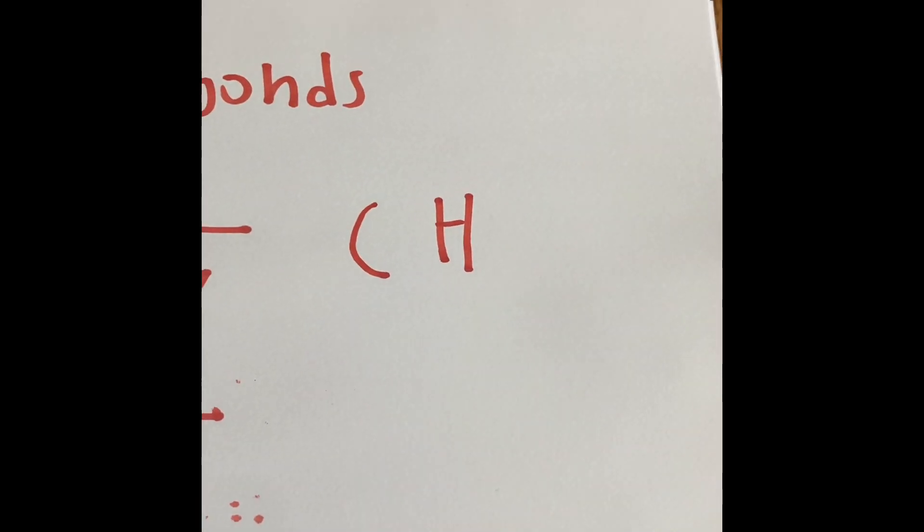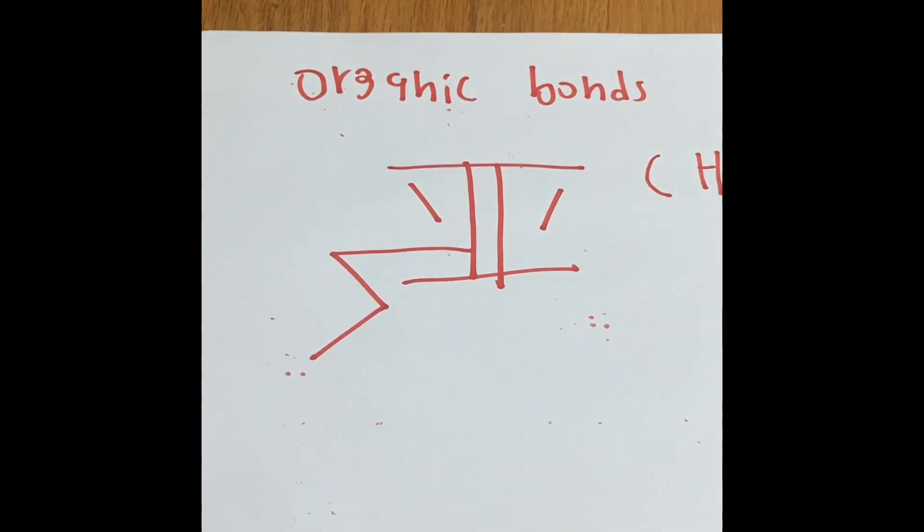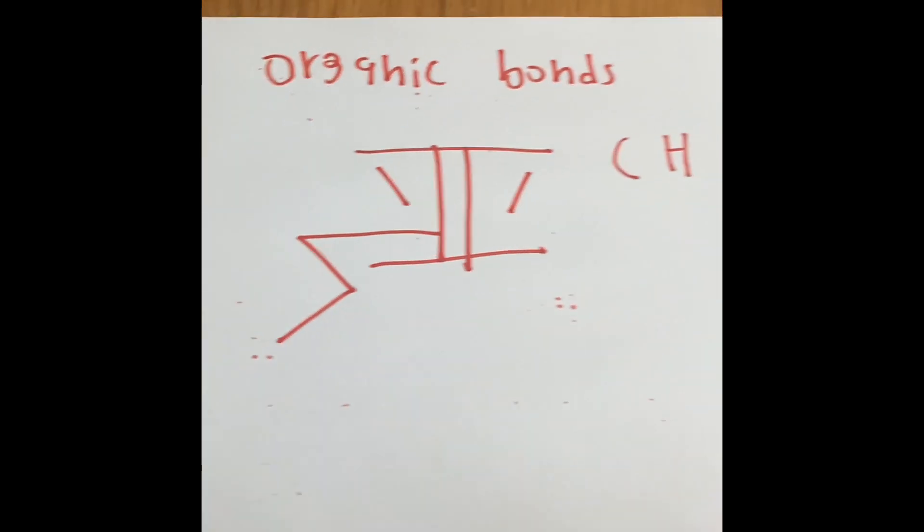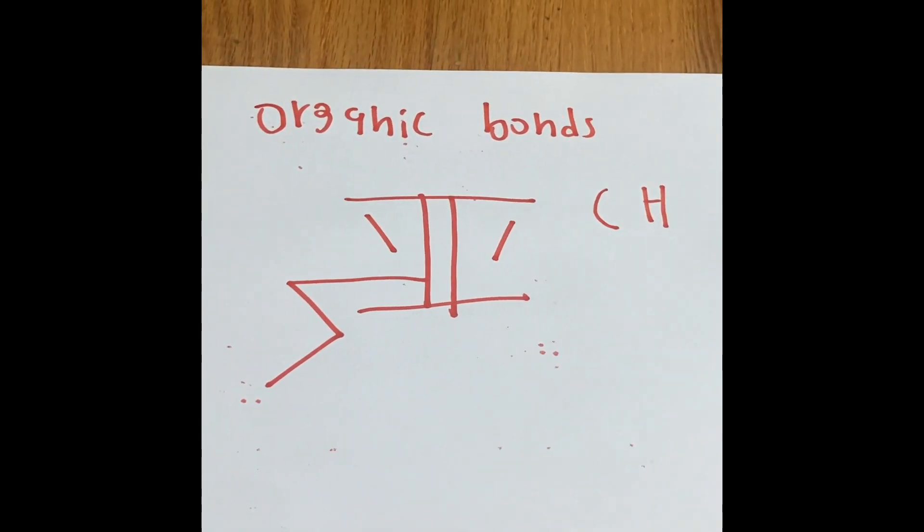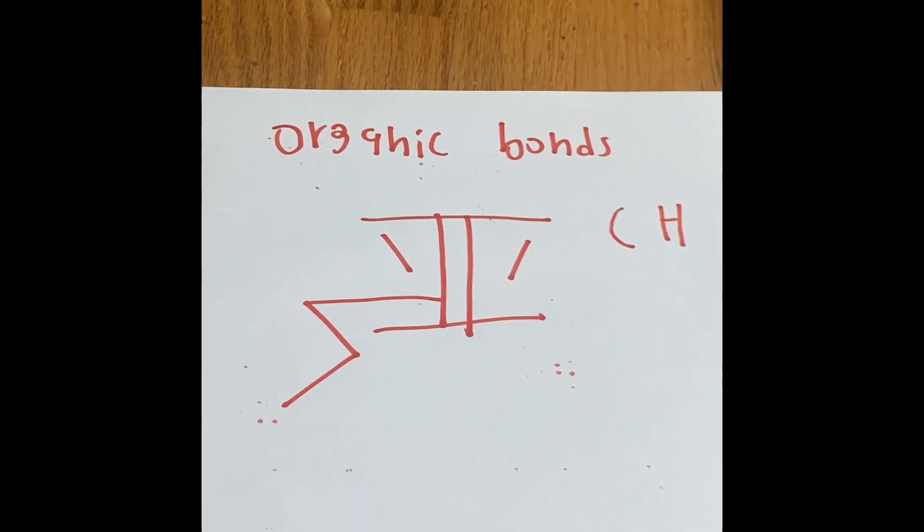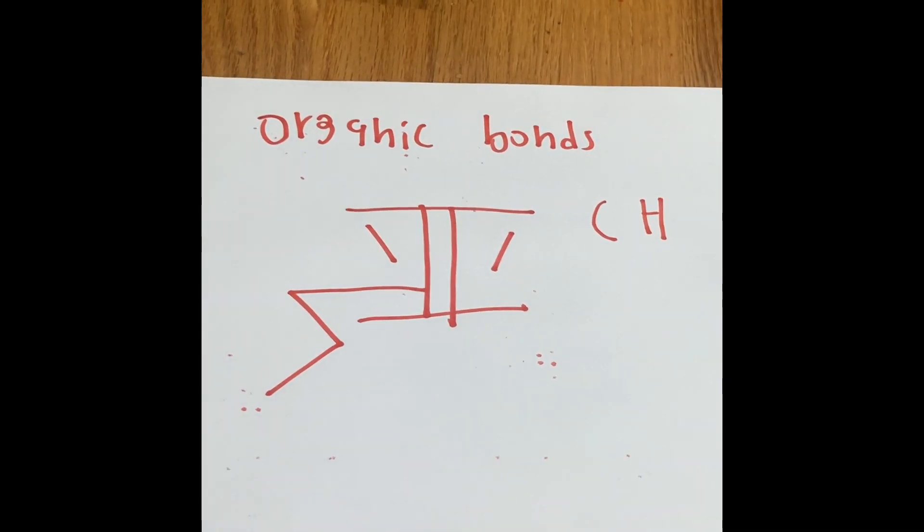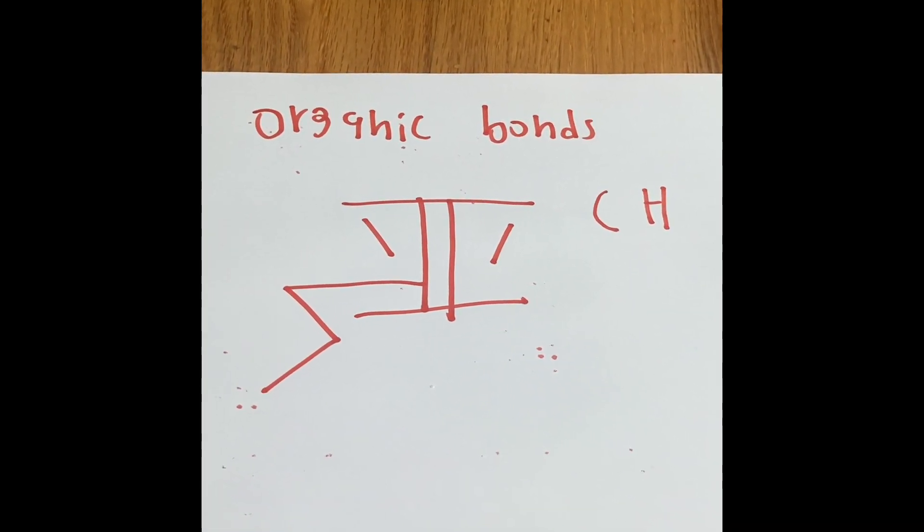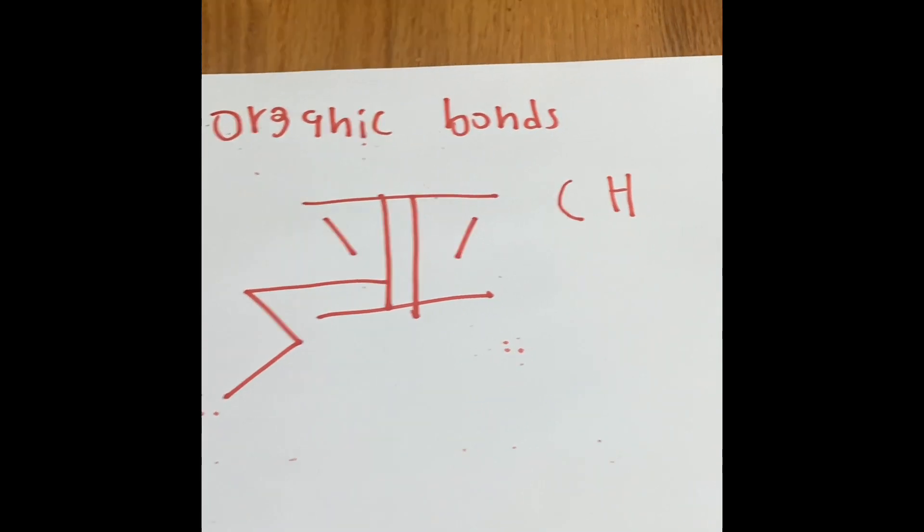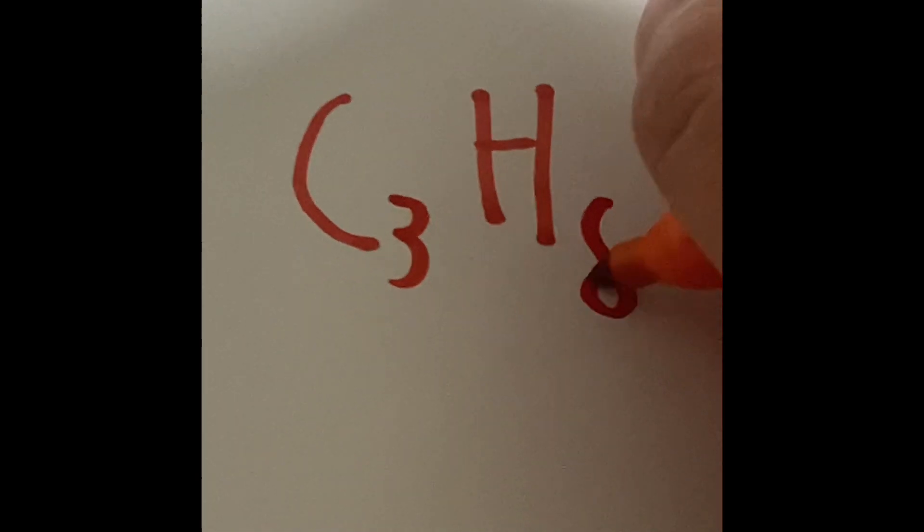If you ever had a grill out during summer vacation, probably you had some kind of grill out with your family or friends at a party. That grill is used to make all your beef, your chicken, your pizza. But what's powering the grill is a propane tank. And the funny thing about propane is it's an organic bond. Propane has to do with carbon and hydrogen. The formula is going to be three carbons and eight hydrogens.